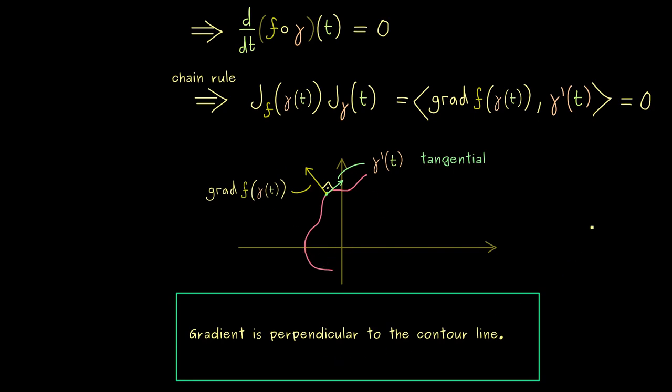The important thing you should take with you is that all these calculations, all these facts also hold in higher dimensions. Because also there it makes sense to look at a curve that lies in a set for the function where it is constant. And then the conclusion is the same, the gradient of f at this point is perpendicular to this tangential vector.